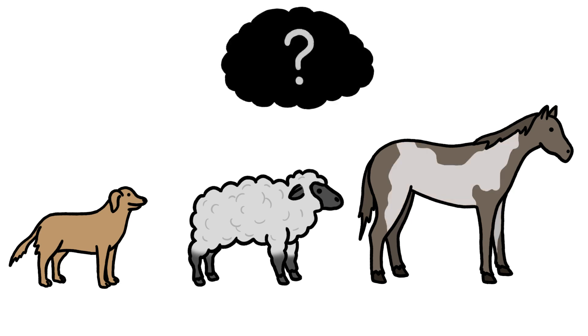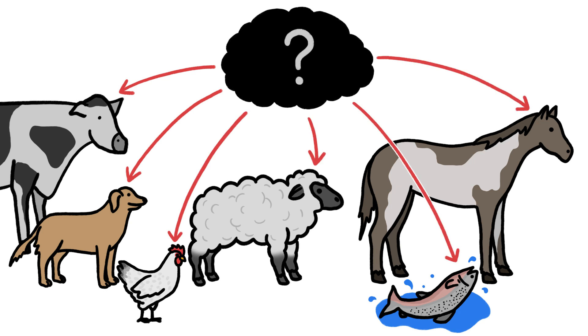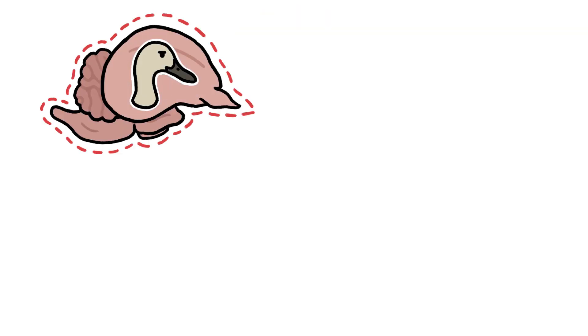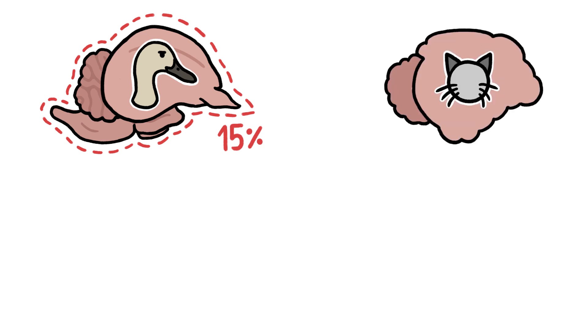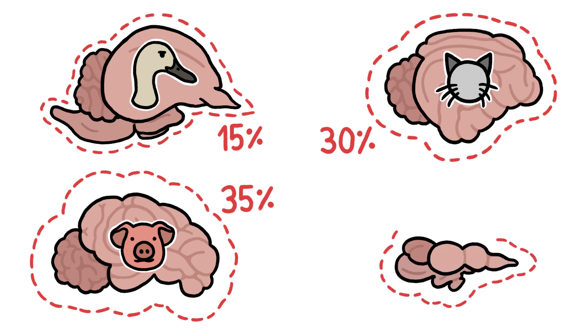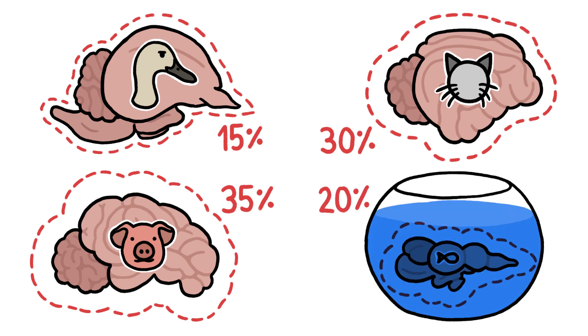But there's a less obvious physical change that virtually all domesticated animals share: shrunken brains. Duck brains have shrunk by about 15%, cat brains by 30%, and pig brains by a whopping 35%. We've even found smaller brains in farmed trout.